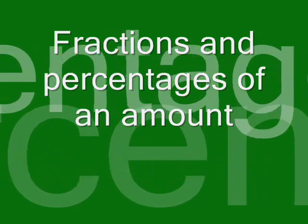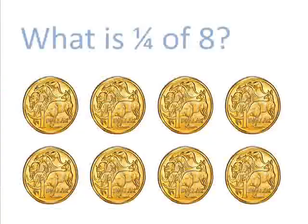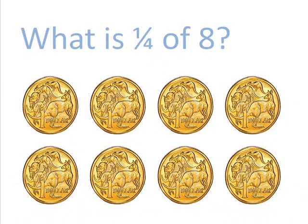I'll just launch straight into an example. What is a quarter of eight? Now, to work out a quarter of something, as you've probably already worked out, you divide it by four. Half of something, you divide it by two.